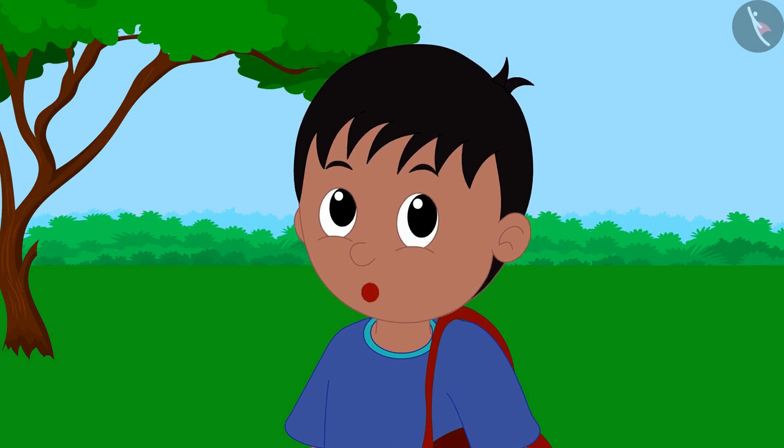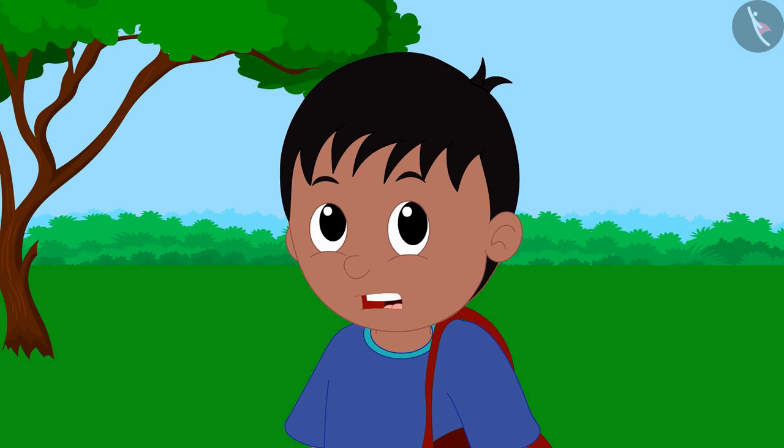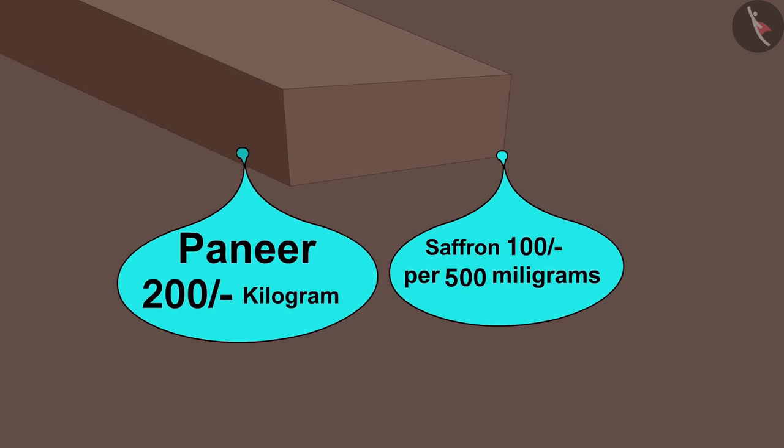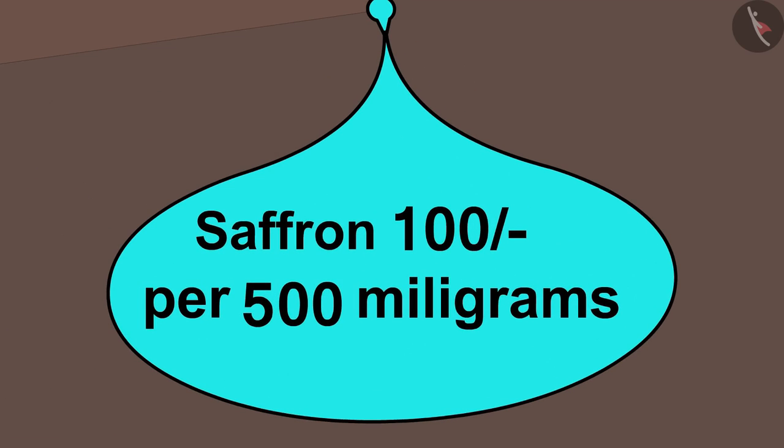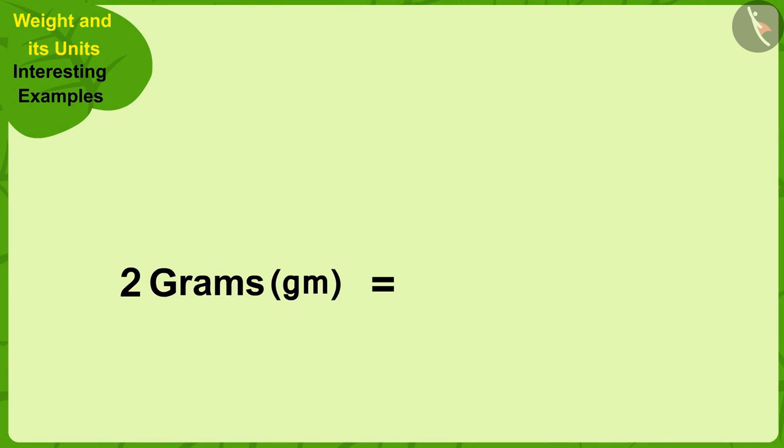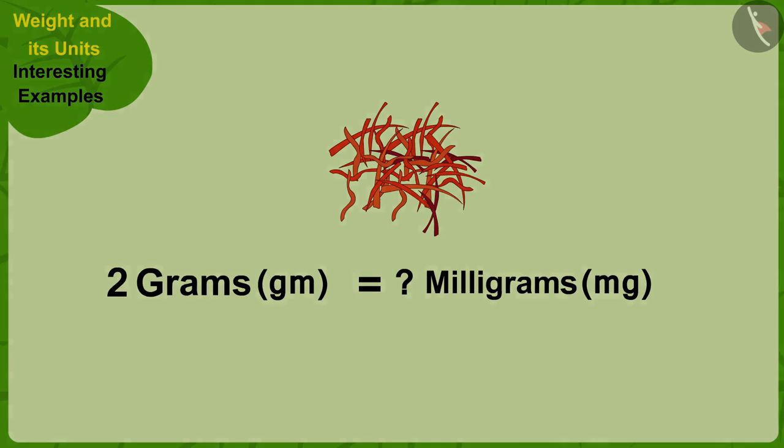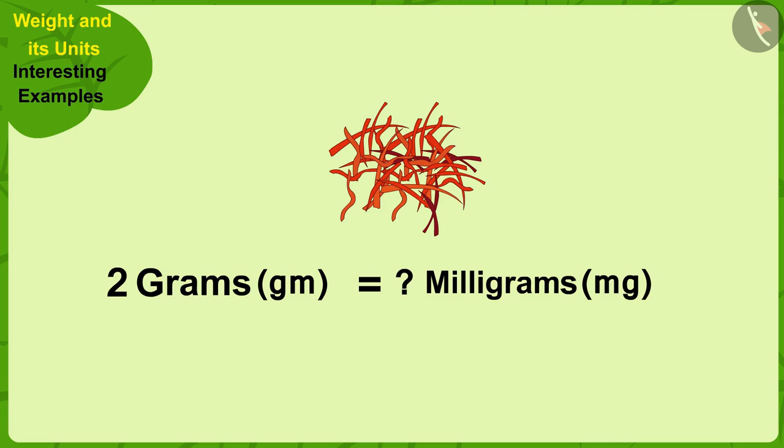Okay, I have to buy 1 kilogram and 450 grams of paneer. Now, the cost of saffron is written in milligrams here. So, how many milligrams will be equal to 2 grams of saffron? Children, can you help Raju find an answer to this question? If you wish, you can stop the video and think of the answer.